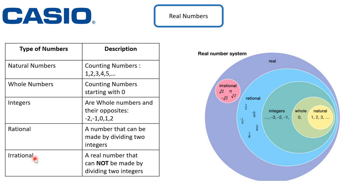What are natural numbers? Natural numbers are counting numbers. For example: one, two, three, four, five, six, etc.